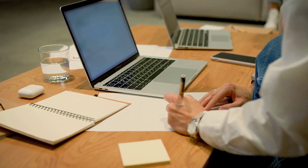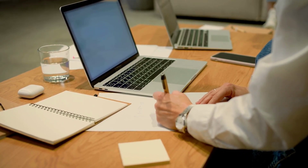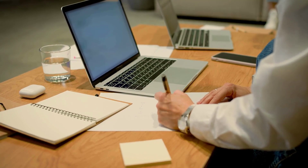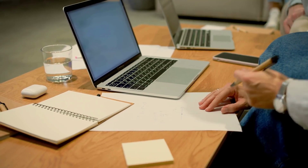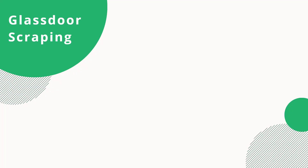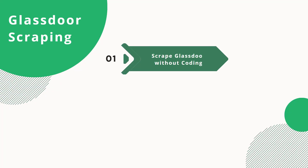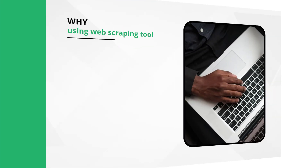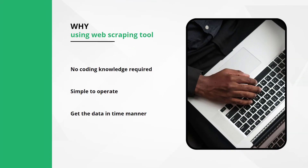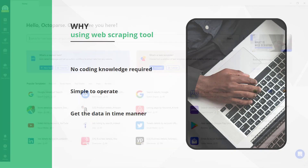This video will guide you on how to pull specific data like company reviews from Glassdoor without knowing any coding language. In today's high-tech world, web scraping can be performed without any coding knowledge at all. We'll use Octoparse as an instance to demonstrate how effortless it can be to extract data from Glassdoor. Just follow these simple steps.